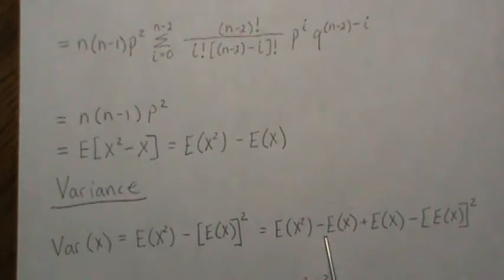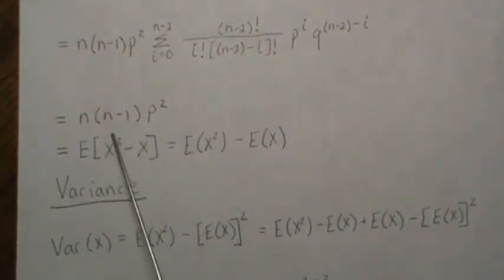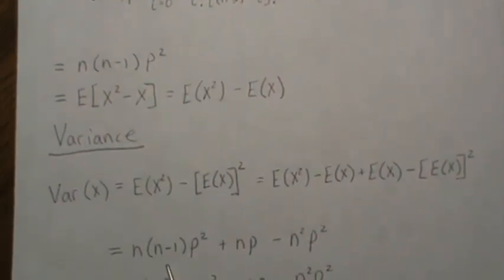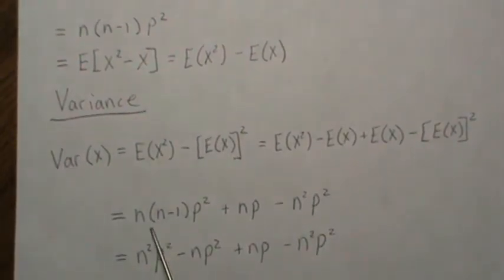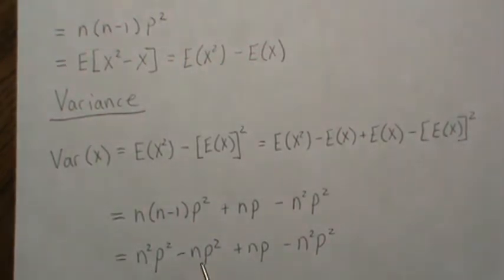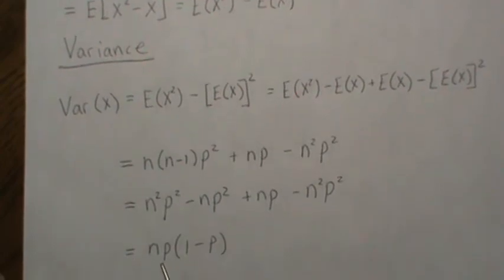So now we can just plug in the values. For this piece, we're going to plug in that. And then we have plus np and then minus n squared p squared. We multiply this out. We get this. Those stay the same. Well, that cancels with this. And we factor out an np here.